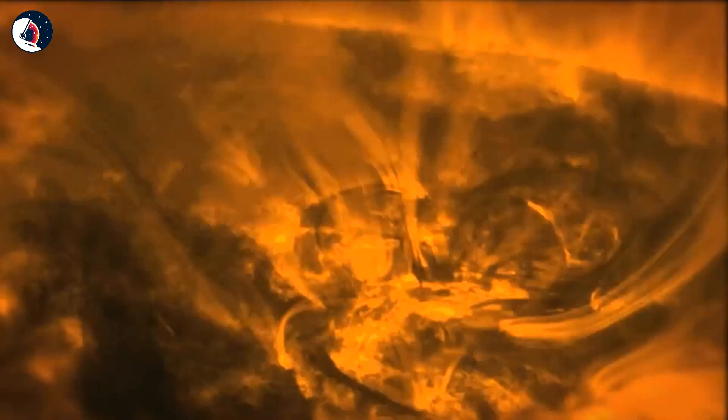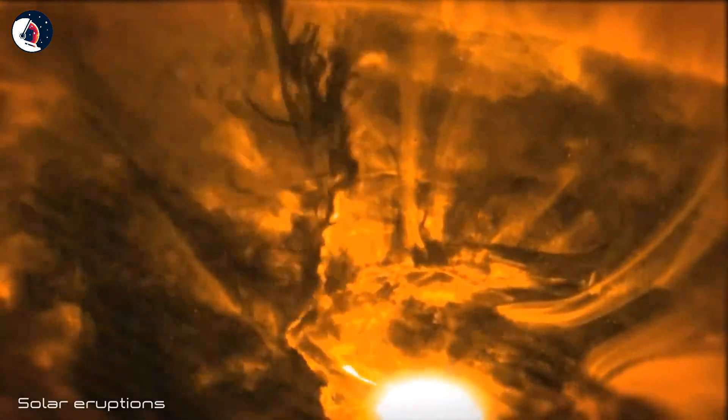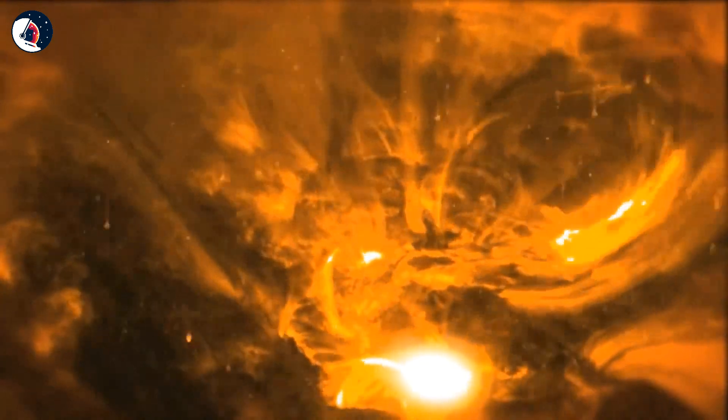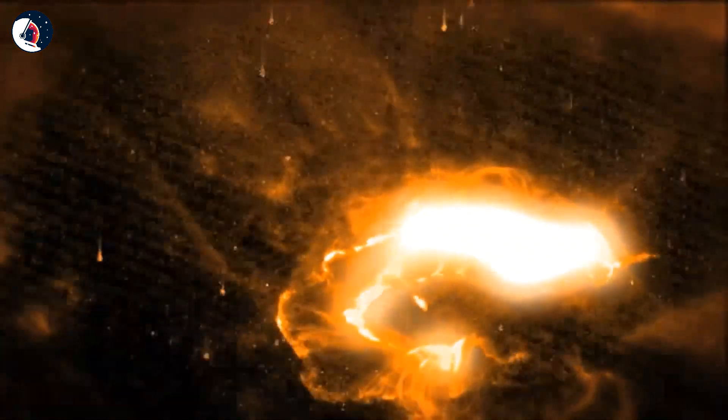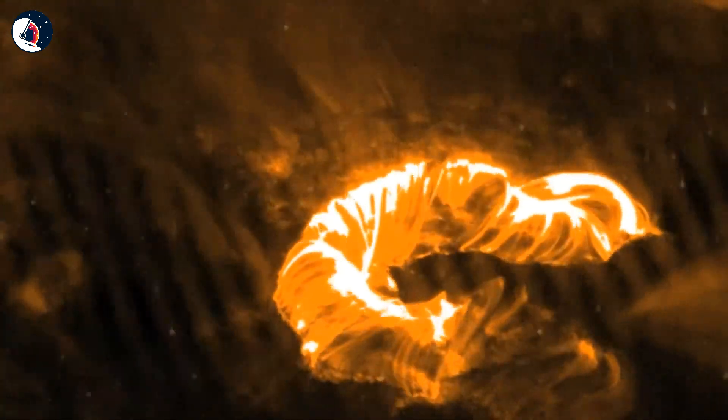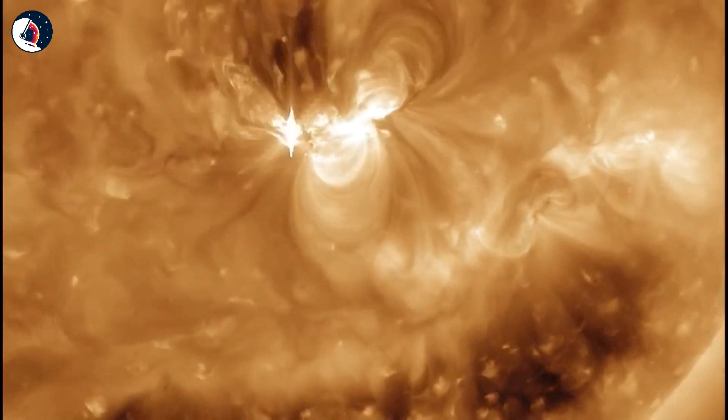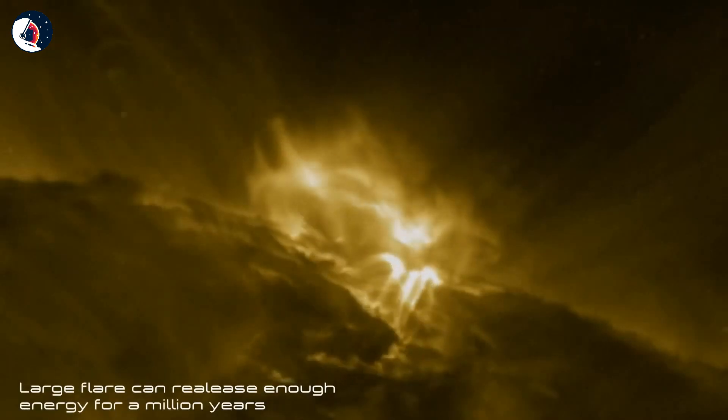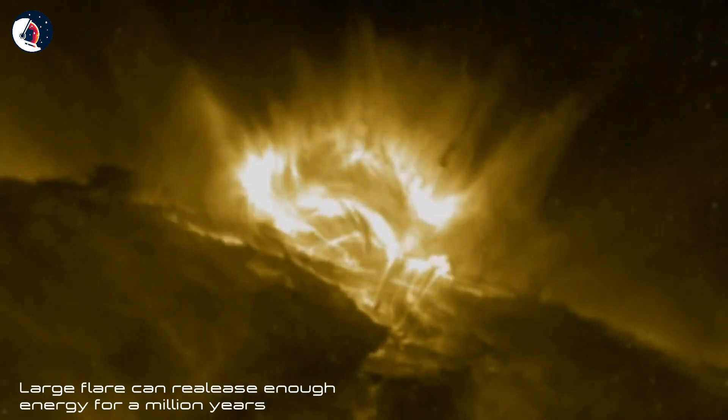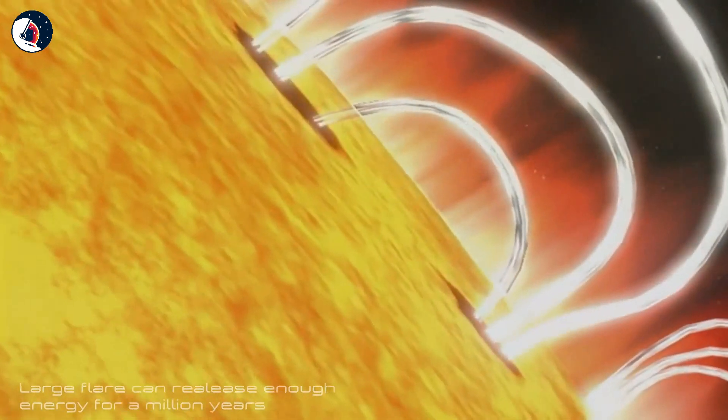So what are these solar eruptions? A solar flare is basically an explosion on the surface of the sun, ranging from minutes to hours in length. Large flares can release enough energy to power the entire United States for a million years.